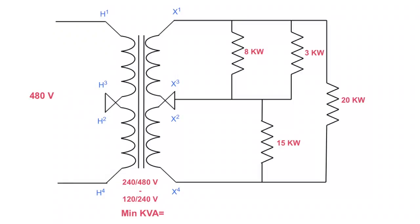In order to determine the minimum KVA of this transformer, we need to figure out the current of each branch. We have an 8-kilowatt load connected to 120 volts — you can see that because the load goes back on the neutral. So we take 8 kilowatts divided by 120 volts and we get 66.7 amps going through that branch. For the 3-kilowatt load connected to the 120-volt coil, 3 kilowatts divided by 120 volts gives me 25 amps.